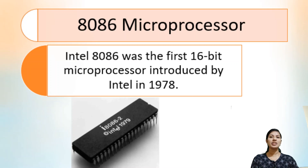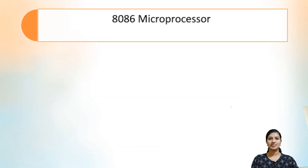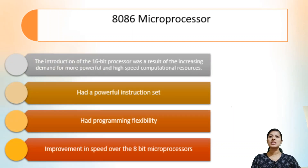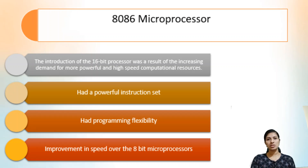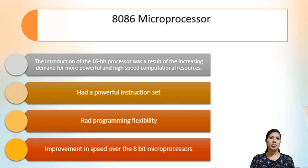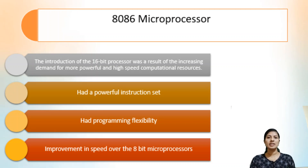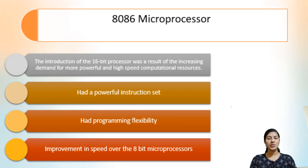Now let's look at some features of the 8086 microprocessor. The introduction of a 16-bit processor was a result of the increasing demand for more powerful and high-speed computational resources. Before 16-bit microprocessors were introduced, there were only 8-bit and 4-bit processors which were not that computationally powerful. The 8086 microprocessor had a very powerful instruction set, programming flexibility, and a speed much better than the 4-bit and 8-bit microprocessors.